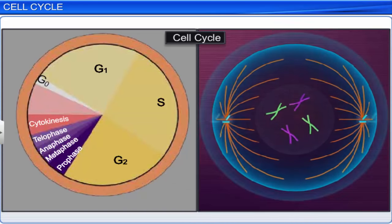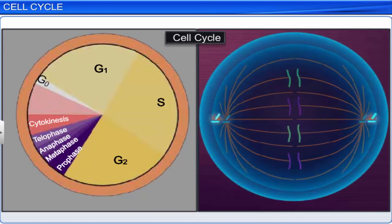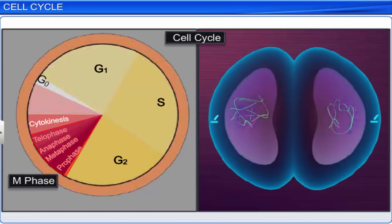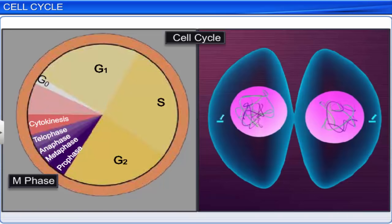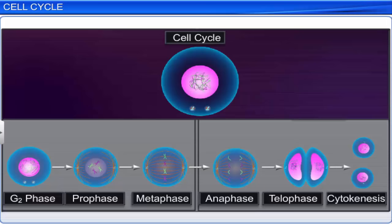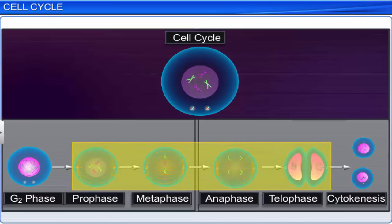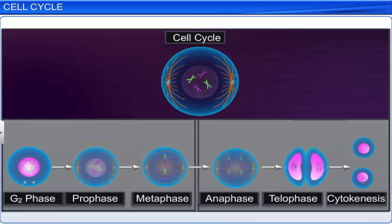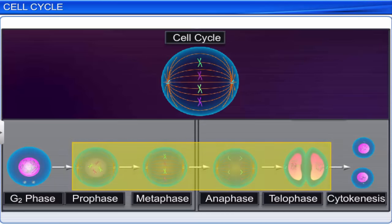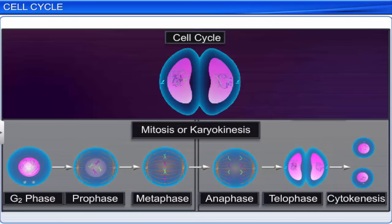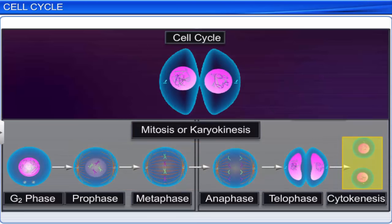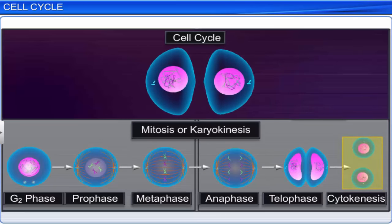The next phase of the cell cycle is the M phase, where actual cell division, or mitosis, takes place. The M phase begins with nuclear division, which is the division of daughter chromosomes, known as mitosis or karyokinesis. It ends with a division of the cytoplasm, which is known as cytokinesis.